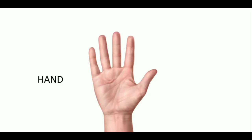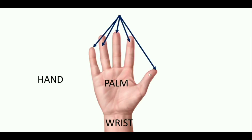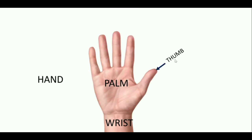So this is our hand. This is what we call the wrist. And this is our palm. These are the five fingers of our hand. This is our thumb.